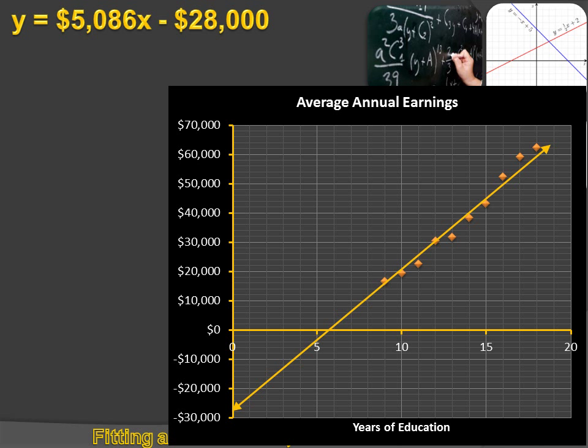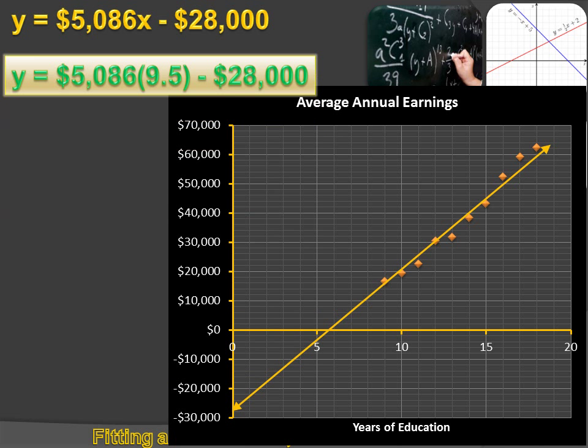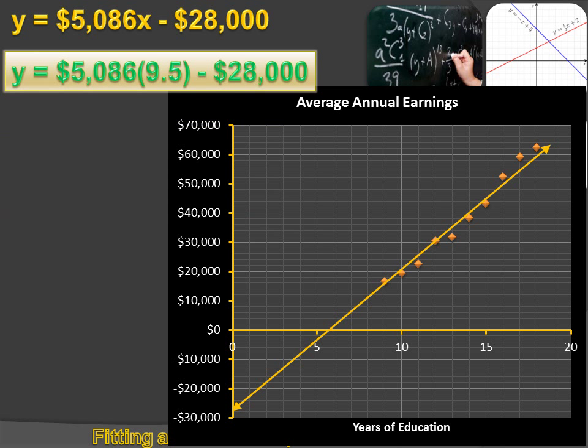But I can do more with it than that. I could say that, for instance, if I had 9½ years of education, how much would I earn? Well, y, the amount of average earnings, equals $5,086 times the number of years of formal education, in this case 9.5, minus $28,000. When I did the math, I'd find out that with 9½ years of education, on average, I could expect to earn $20,317 per year.